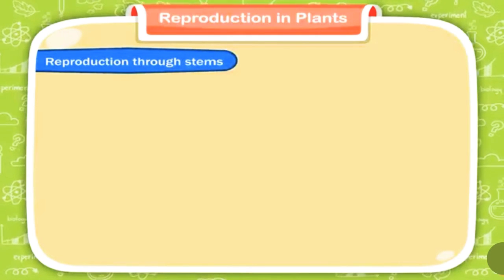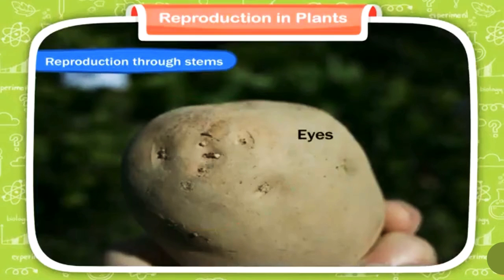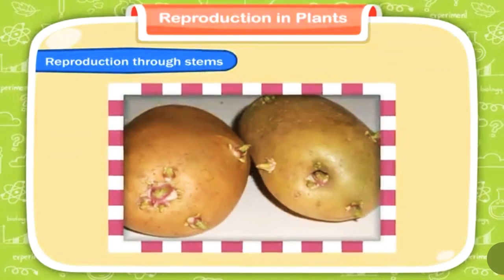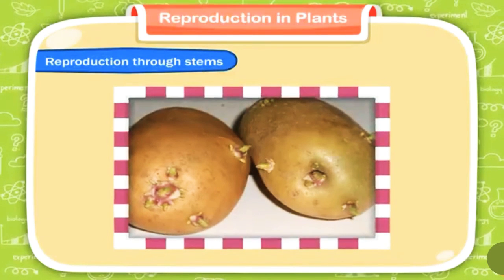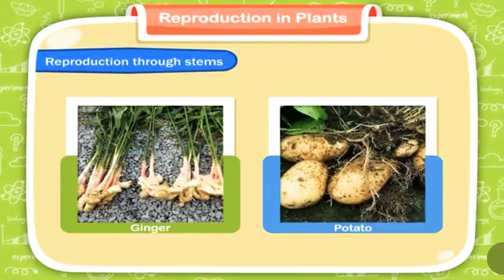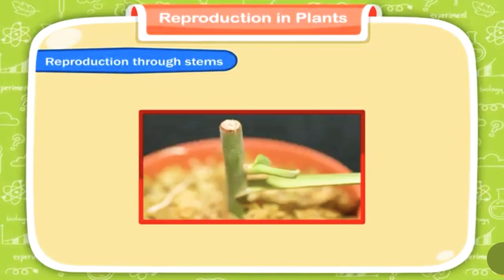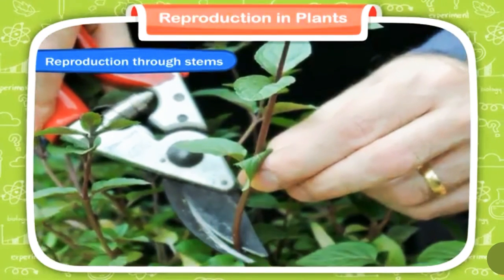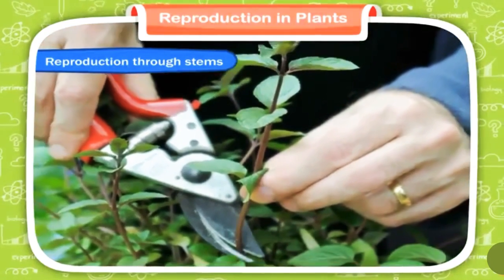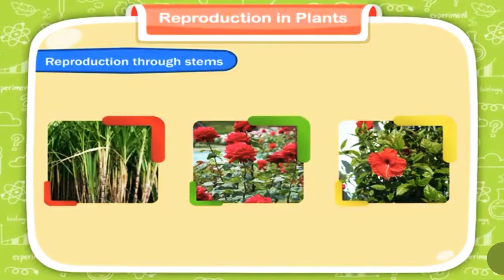Reproduction through stems. Have you observed a potato carefully? It has some small black dots on it called eyes. When an eye — also called a bud — is planted, it grows into a new plant. Several plants like ginger and potato are actually underground stems. These stems store food and grow into new plants through their buds. Some new plants can also grow from pieces of stem called stem cuttings. Many plants like sugar cane, rose, hibiscus, etc. grow from stem cuttings.